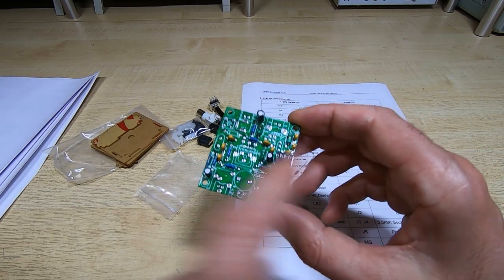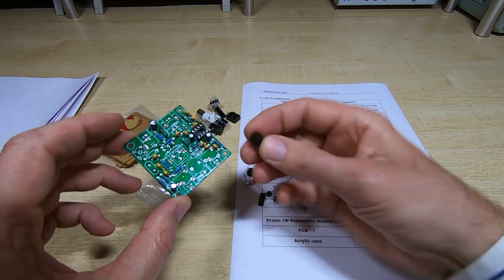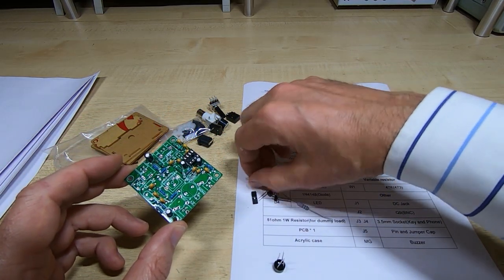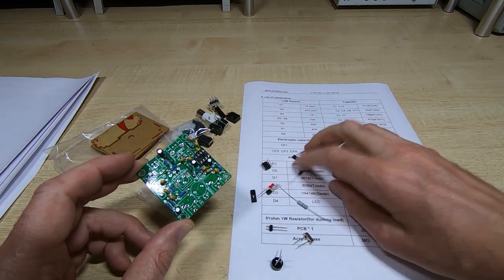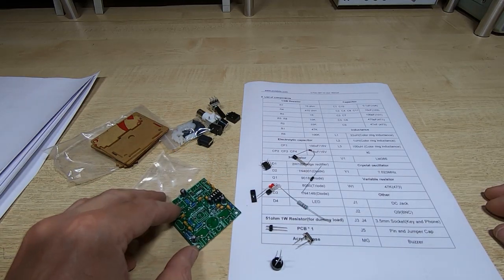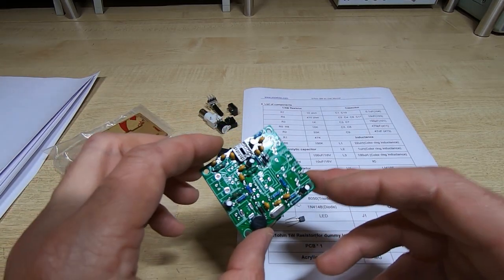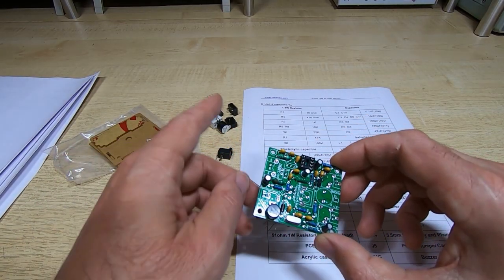We've just got a few inductors here so we'll get those fitted. That's the inductors fitted so the next thing we'll fit is the IC socket and the electrolytics. We've got the IC socket and the electrolytics fitted so the next thing we'll fit is the bridge rectifier and the crystal and the jumper. That just leaves a couple of diodes and a couple of transistors and then we can get onto the mechanical parts.